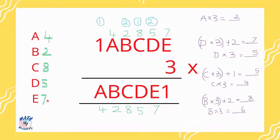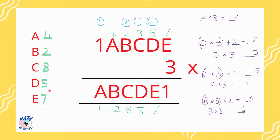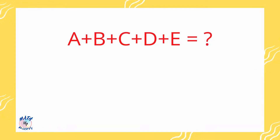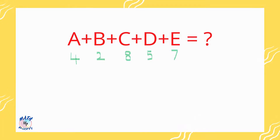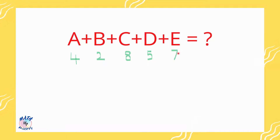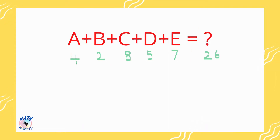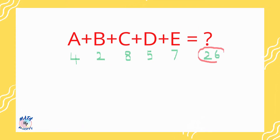The next step is to add these letters to find the answer. We need the sum a plus b plus c plus d plus e. Substituting: a is 4, b is 2, c is 8, d is 5, and e is 7. When you add all these numbers together you get 26. So 26 is the answer for the question. Thanks for watching.